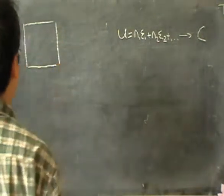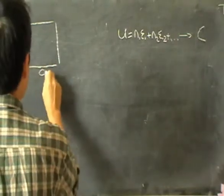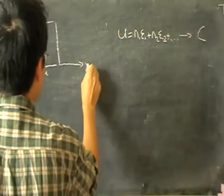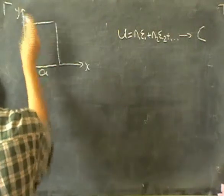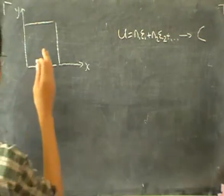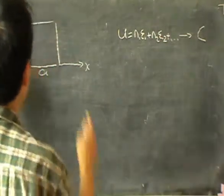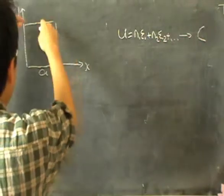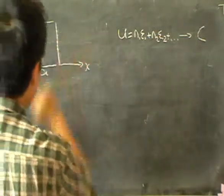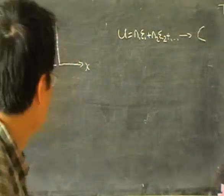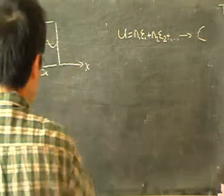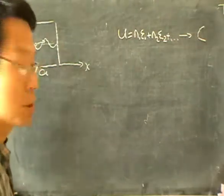Consider a cubic box with a side of length a. Let me call one side the x-direction, another the y-direction, and the axis coming out of the board the z-direction. Now if we have a box like this with zero potential inside and infinite potential at the wall, so that the particle cannot escape, when you solve Schrödinger's equation along each direction, the solution is essentially a sine wave, and we have the sine waves in the three directions multiplied together.